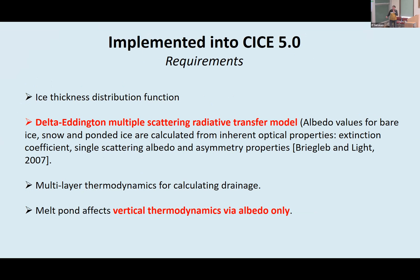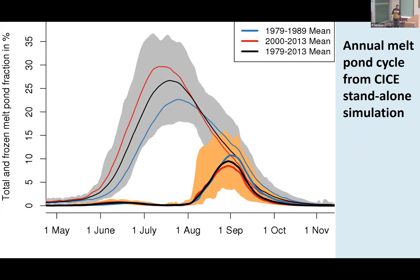Requirements for the implementation include the ice thickness distribution in the model. In the CICE model, this is based on the Delta Eddington radiation scheme, where albedo values for bare ice, snow, ice, and pond water are calculated from inherent optical properties such as extinction coefficients, scattering albedo, and asymmetric properties. Importantly, melt ponds in this scheme affect only the albedo — they are not a full layer but impact vertical thermodynamics through albedo alone.